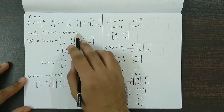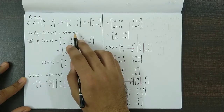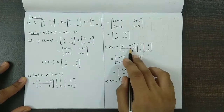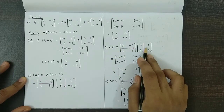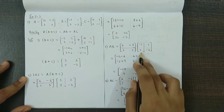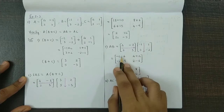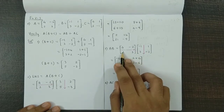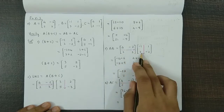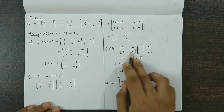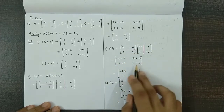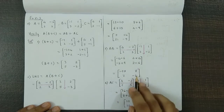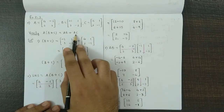For the right hand side we need to obtain two matrices: first AB and then AC, then add both. So first we obtain A into B — we write down matrix A and matrix B and multiply. R1 into C1: minus 4 minus 6. R1 C2: 4 plus 4. Second row, first column: minus 2 plus 9. Second row, second column: 2 minus 6. So matrix AB is minus 10, 8, 7, minus 4.